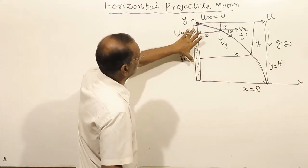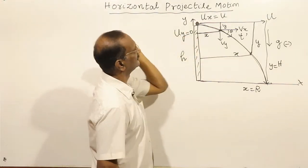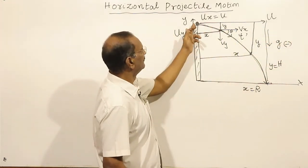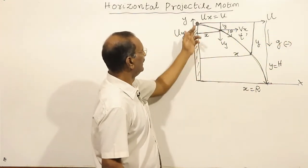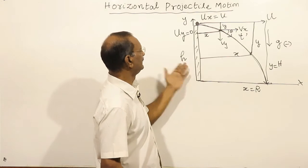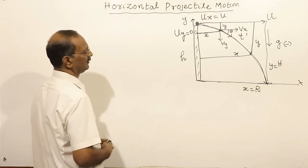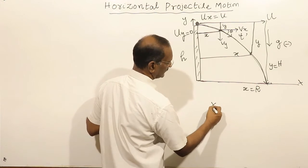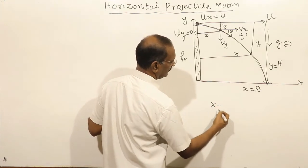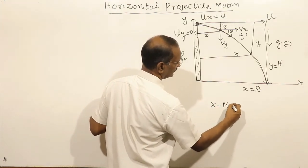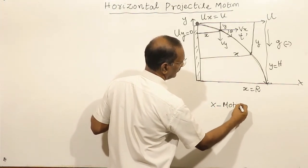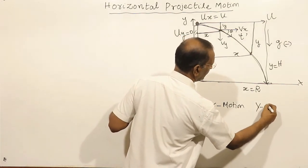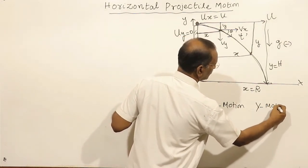Consider a projectile launched from the top of a building or tower of height h with initial velocity. The x-displacement gives the horizontal range and the y-displacement gives the vertical drop. We analyze motion in the x-direction and motion in the y-direction separately.